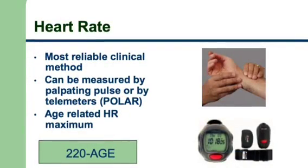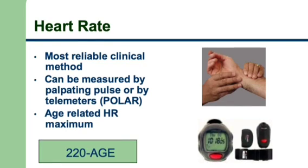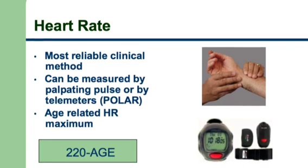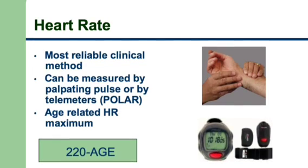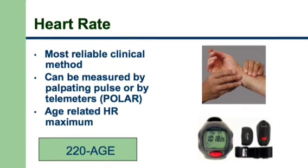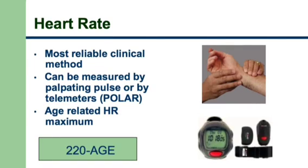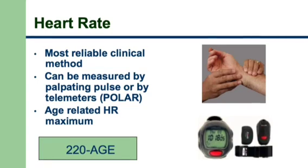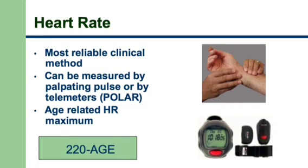Heart rate significantly correlates with VO2 max and is a more practical method for measuring exercise intensity. Heart rate can be measured by pulse, but measuring pulse manually is often not reliable and it is difficult during exercise. Probably the best way to measure heart rate is through telemeters which remotely sense the pulse — an example is the Polar heart rate monitor.